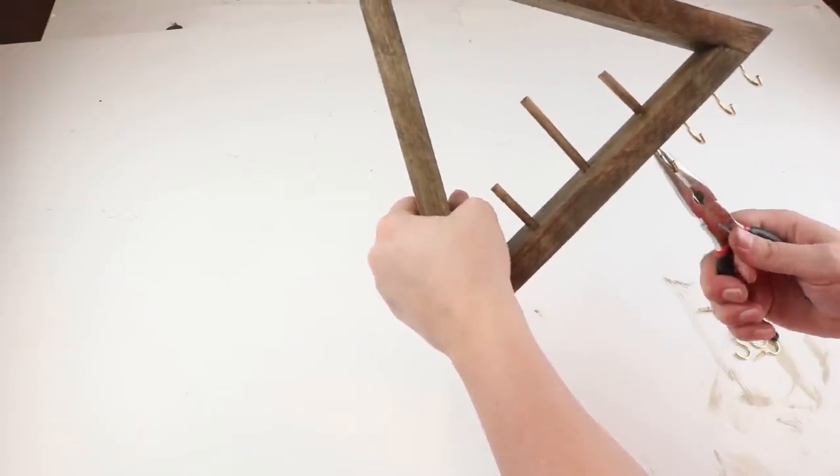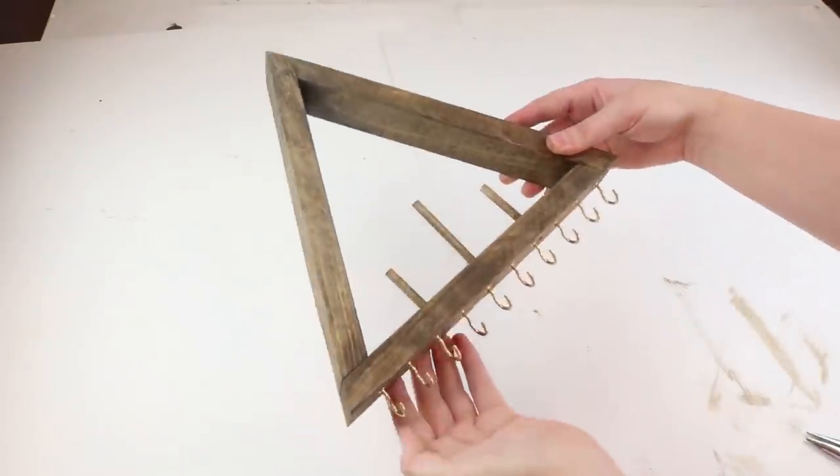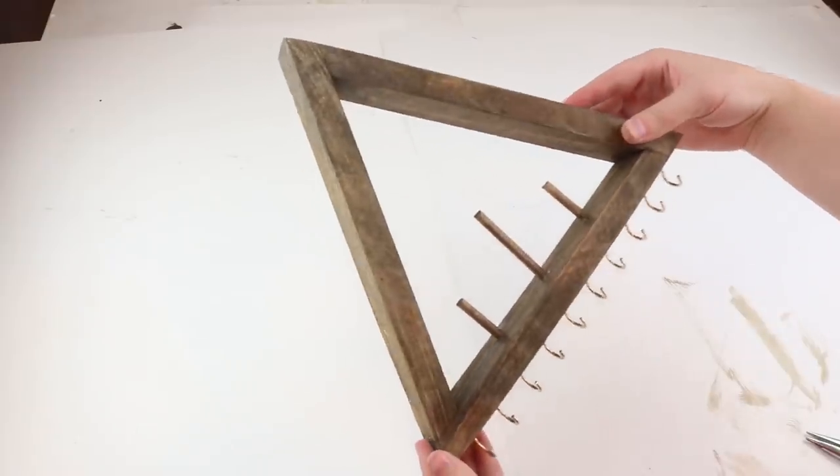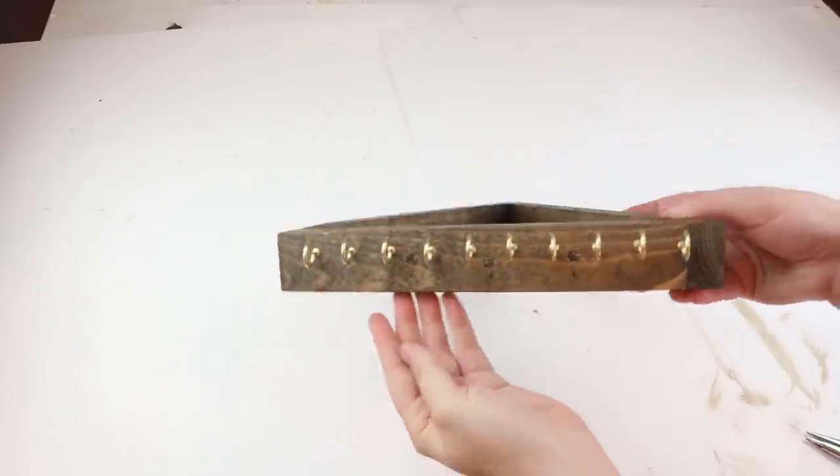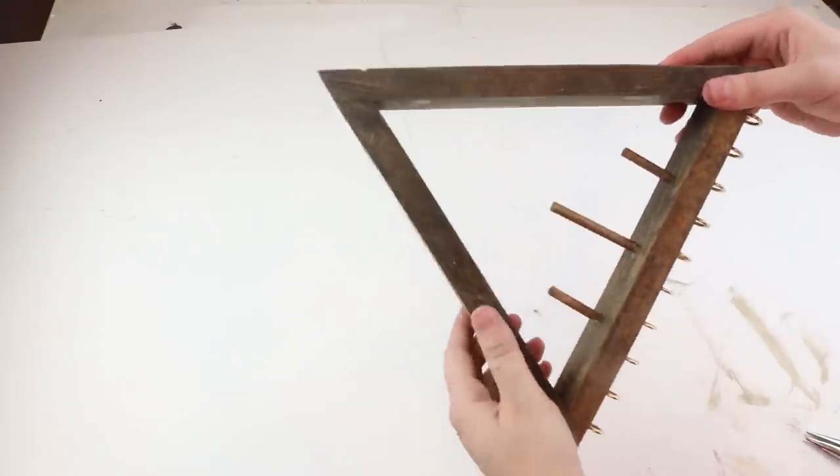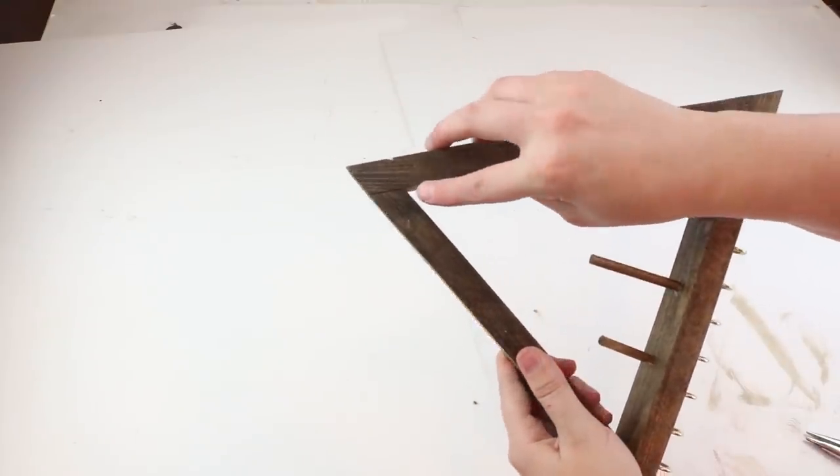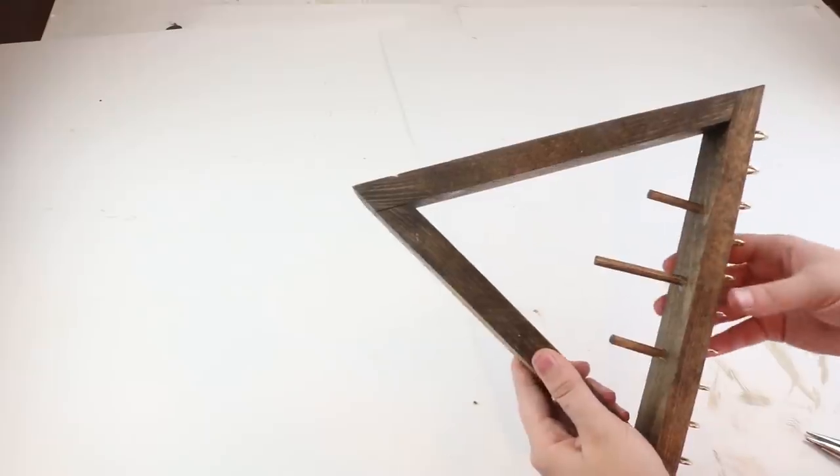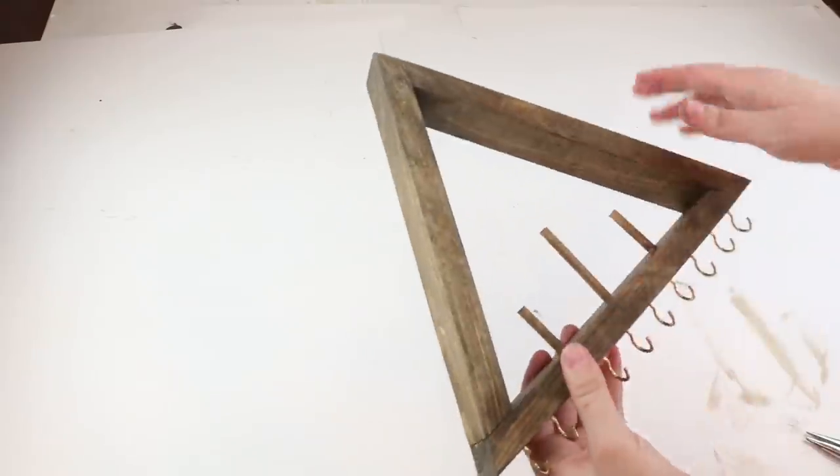This is how the finished product turned out and I really love how it looks. It's perfect for all of my jewelry. To secure it on the wall you can put a little command strip or a picture hanger right there, or you can just put a nail and hang the triangle part right on it.